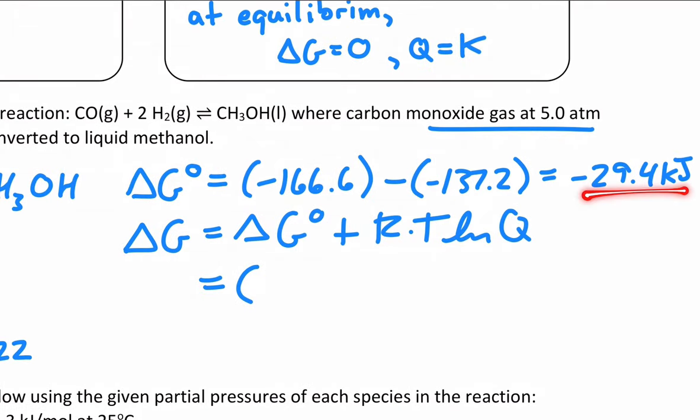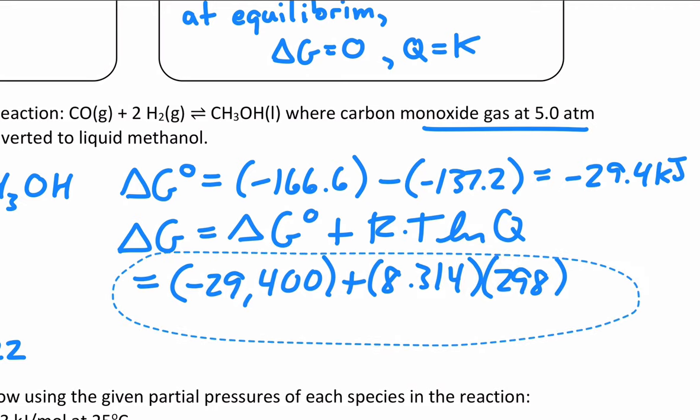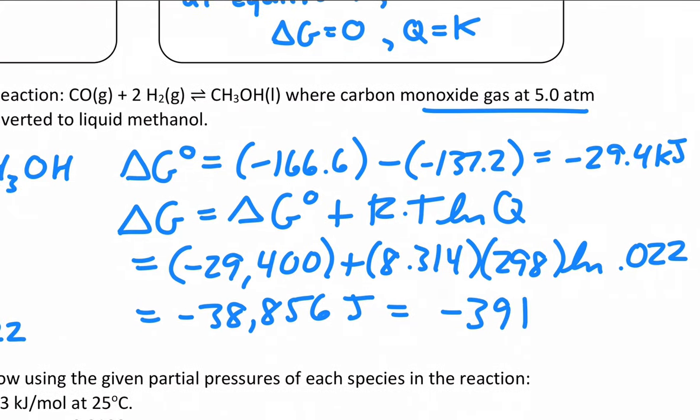Multiply this number by a thousand. So I get negative 29,400 joule per one of those reactions times R is 8.314. The temperature is 298 Kelvin. And then the natural log of what we just found out, 0.022. The natural log of 0.022. Doing all that math in your calculator, you get negative 38,856 joules, which we'll just round and divide by a thousand. We get negative 39 kilojoules.